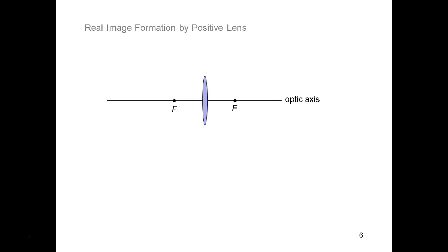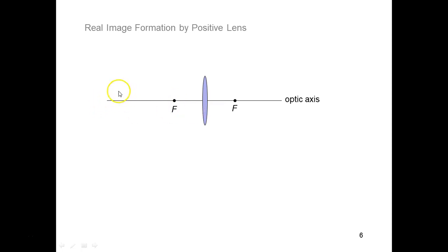When we send light in from left to right, if it was collimated, it would be focused to that back focal point. To the left is front, to the right is back. If we sent collimated light from right to left, it would focus to the front focal point. It's good for reference to remember where this front focal point is, because where the object is relative to the front focal point will tell you something about the imaging of the lens.